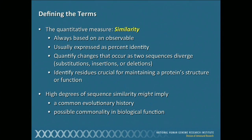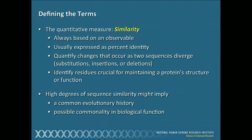Similarity is always based on an observable — in this case, how many residues are lining up with each other. It's usually expressed as a percent identity, and it allows you to quantify changes that occur as the two sequences diverge by looking for substitutions, insertions, or deletions. It also helps to quickly narrow down which residues that have been aligned are important for maintaining a protein's structure or function. Whenever we see a high degree of similarity, it will imply either a common evolutionary history or possible commonality in biological function.